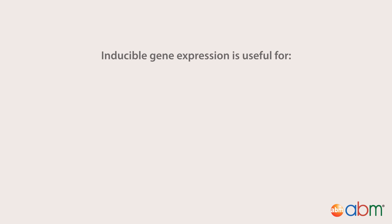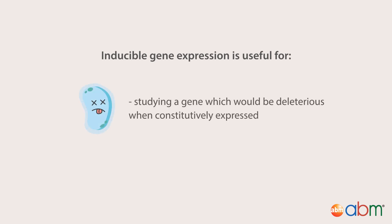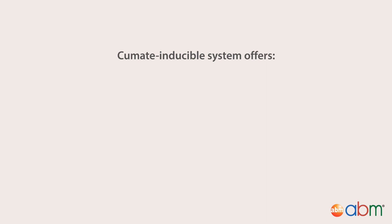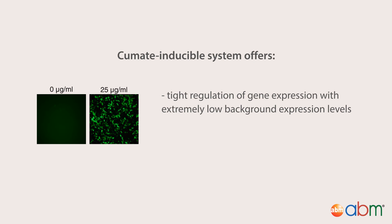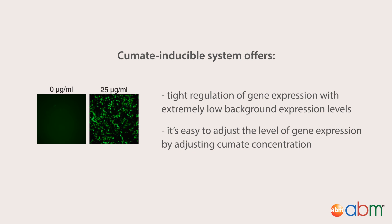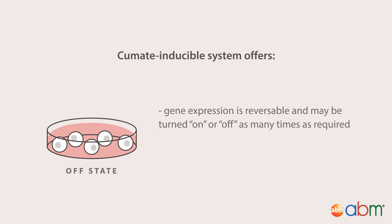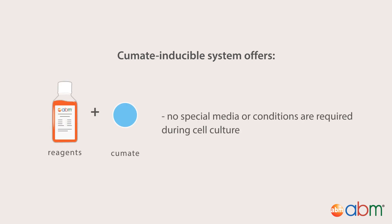In conclusion, inducible gene expression is useful for studying a gene which would be deleterious when constitutively expressed, and for determining a clear cause and effect relationship between genotype and phenotype. The cumate-inducible system offers the following advantages over other inducible systems. Number one, tight regulation of gene expression with extremely low background expression levels — very little leakage compared to similar systems. Number two, it's easy to adjust the level of gene expression by adjusting cumate concentration; the relationship between concentration and expression is linear and titratable. Number three, gene expression is reversible and may be turned on and off as many times as required. And number four, no special media or conditions are required during cell culture.